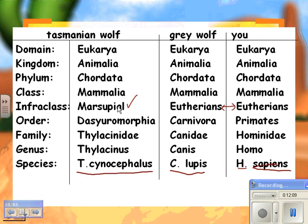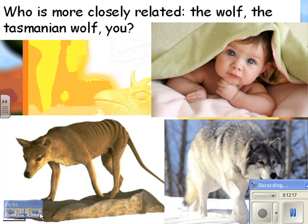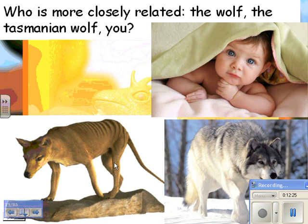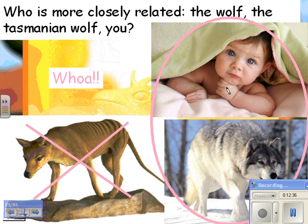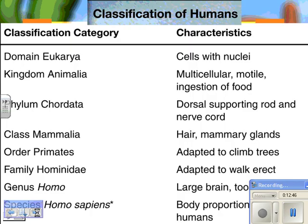This is an example of convergent evolution, where two organisms do the same thing, live in the same kind of environment, hunt the same kind of prey, and they end up looking alike — which is so absolutely amazing. These things are not very closely related, yet they look so much alike. The Tasmanian wolf is probably extinct; there were sightings not too many years ago, but they think it's extinct, or at least almost extinct.